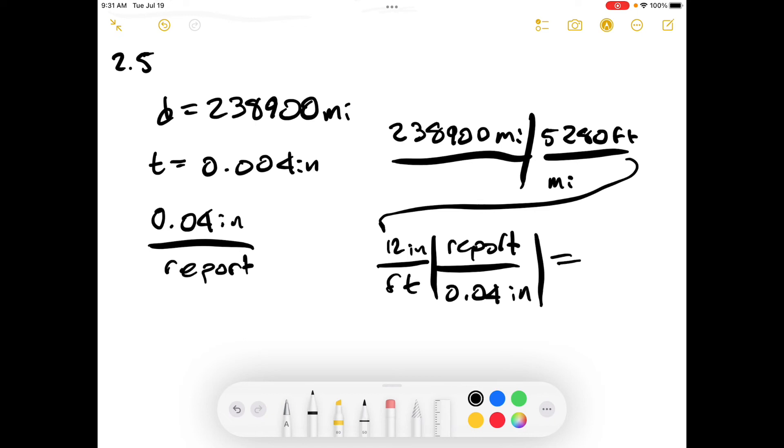and we'll use our conversion factor for inches per report that we just made. And now our inches cancel with inches, and our feet cancel with the feet, our miles cancel with the miles, we just multiply all the numerator, divide by the denominator,